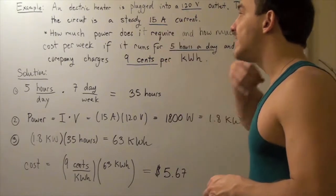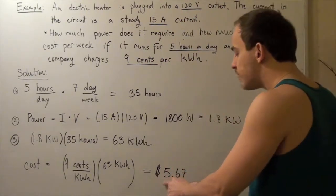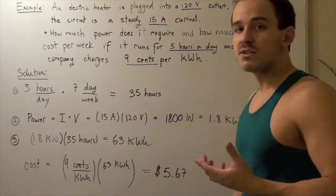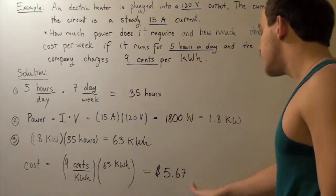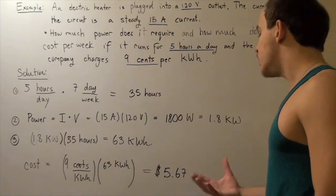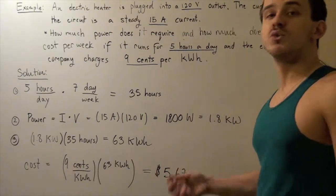So per week, it costs around $5.67. If we want to find the cost per month, we multiply this by 4 and get around $22.